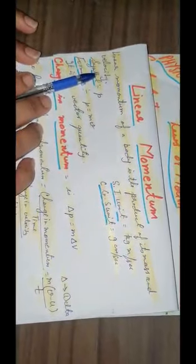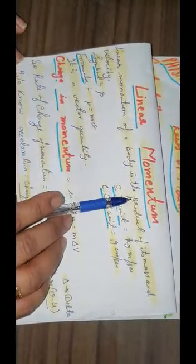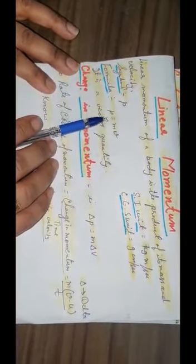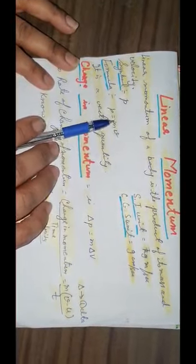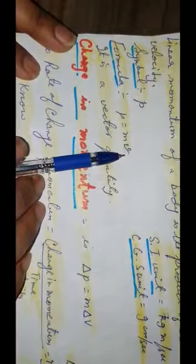What is momentum or linear momentum of a body? It is the product of its mass and velocity. Its symbol is small p. Formula is p is equal to mass into velocity, where M is the mass and V is the velocity.